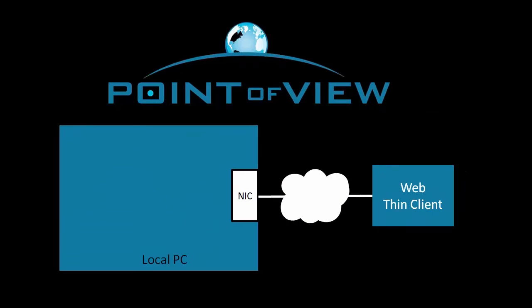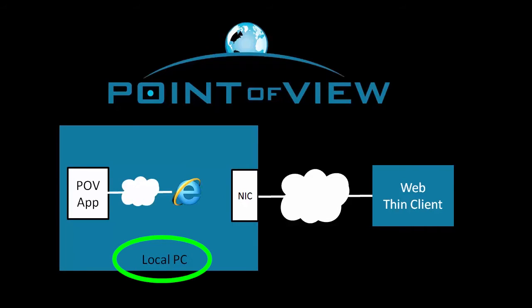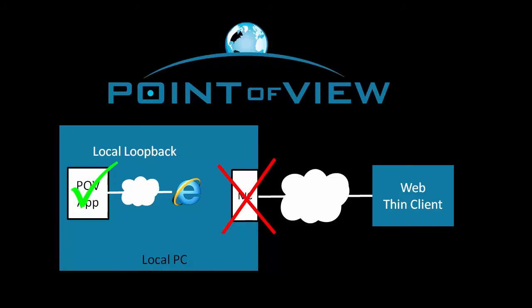First, we'll access the Point of View runtime app from Internet Explorer right on the same PC using local loopback. This verifies that the Point of View application is working and the files are set up correctly, without having to worry about hardware drivers, network settings, routers, gateways, and all that other stuff.